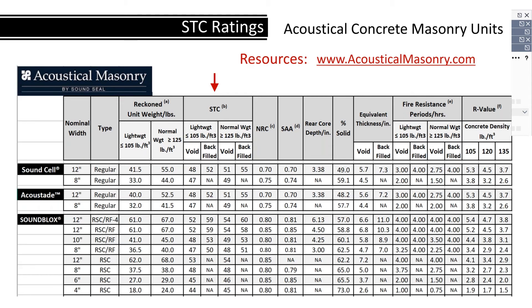STC ratings for cell-on-cell acoustical masonry can be found at acousticalmasonry.com. Ratings for both unfilled and filled units are provided. By filling just the back portions of the units, extremely high STC values may be achieved — sound cell back-filled can get STC 55, and sound blocks filled achieves STC 60. Even unfilled, they rate 51 to 54. So they will both absorb sound in one room and block sound from passing through to the next room.